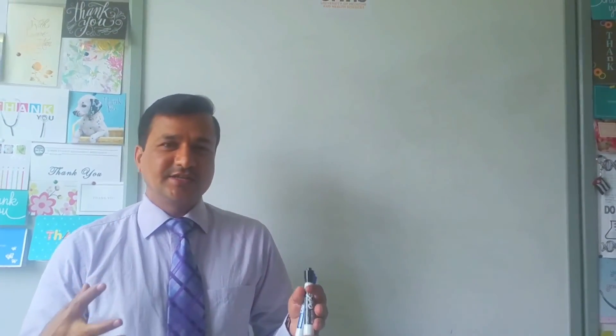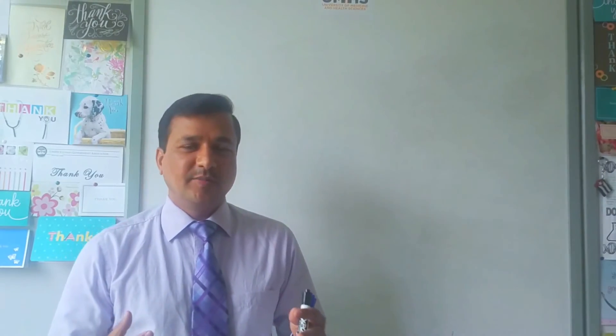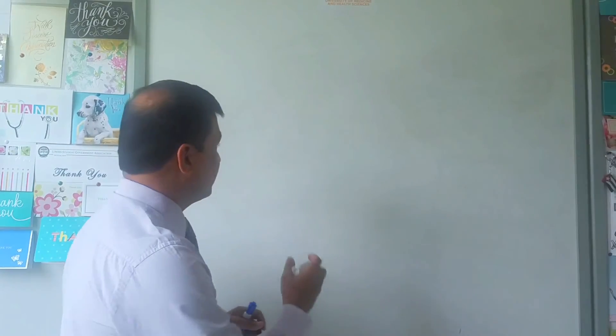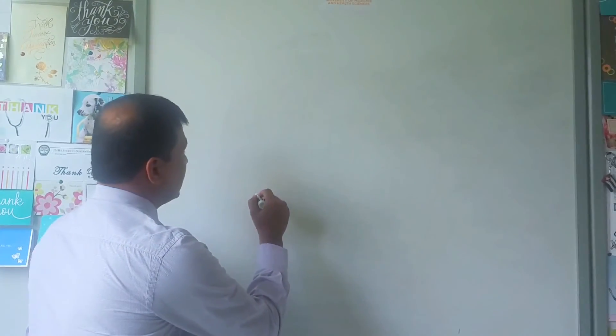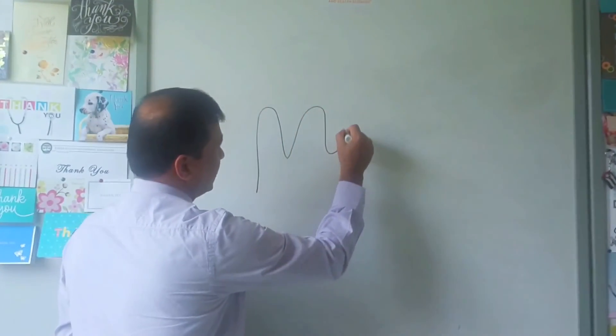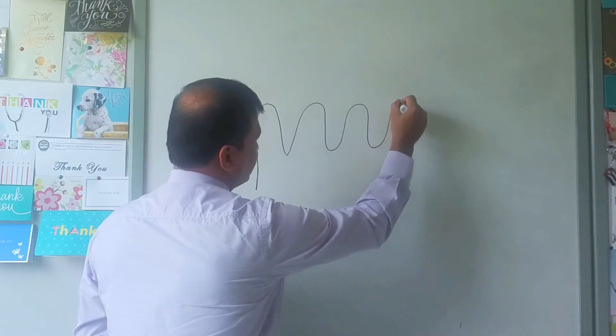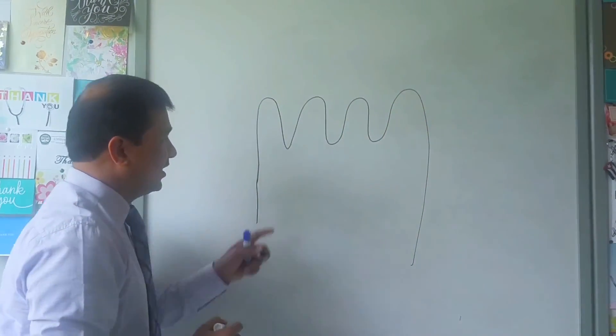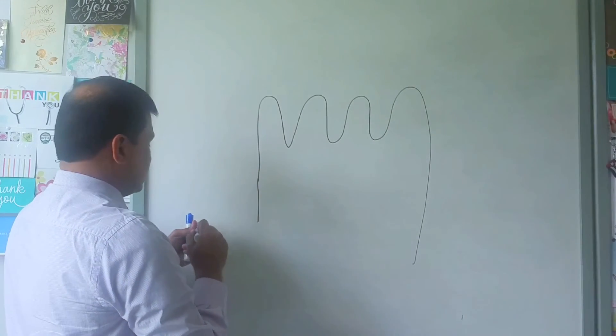Let me explain how the mixed micelle, which contains all the digested lipid molecules, will be absorbed into the enterocyte. The absorption usually occurs over the brush border epithelium of the jejunum, which has a brush border there.